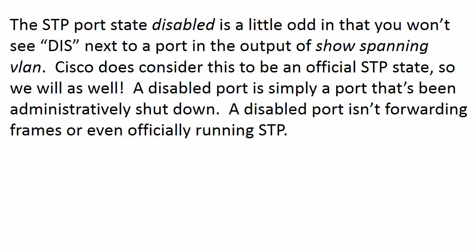The STP port state 'disabled' — you will never see DIS next to a port in the output of show spanning VLAN, a command we're going to use often. Cisco does consider this to be an official STP state, so we will as well. This is a port that has simply been administratively shut down, and a disabled port is not even running STP.